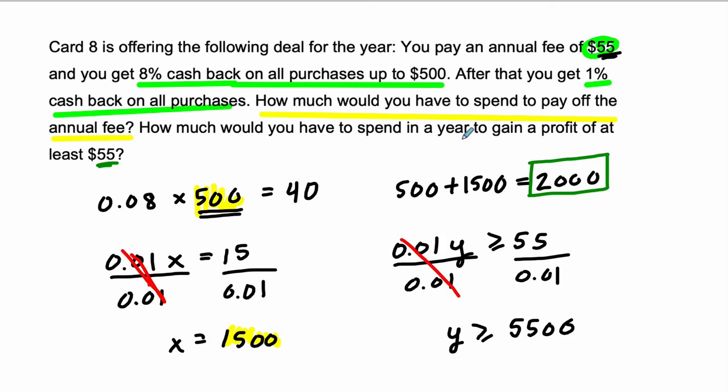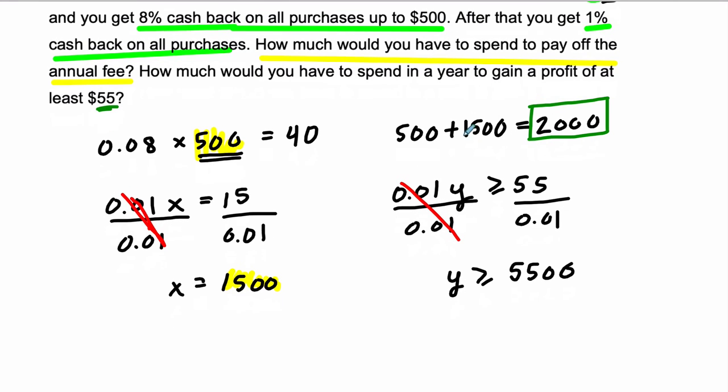In order to get a profit of at least $55, we didn't just spend the $5,500. We had to also spend the $2,000 before it, right? So this $5,500 is not necessarily an answer just yet. But to get the full $55, we had to spend $5,500.